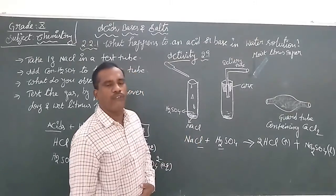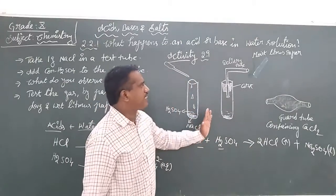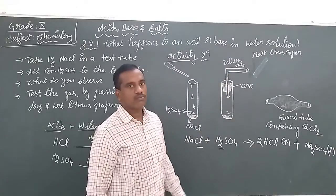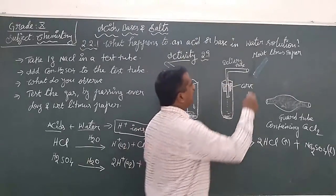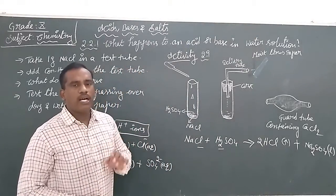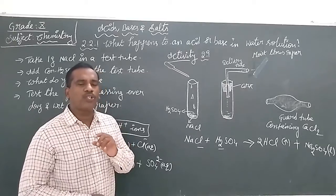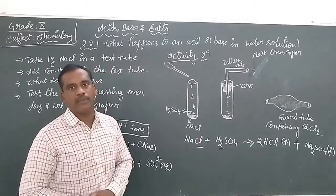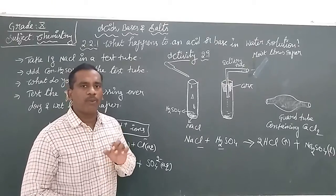The HCl gas will be escaping through the delivery tube. This gas coming out through the delivery tube is allowed to be passed onto the blue litmus paper. Why do we use blue litmus paper? In the presence of acid, blue litmus paper will turn to red. In the presence of an acidic solution, blue litmus paper changes to red color.